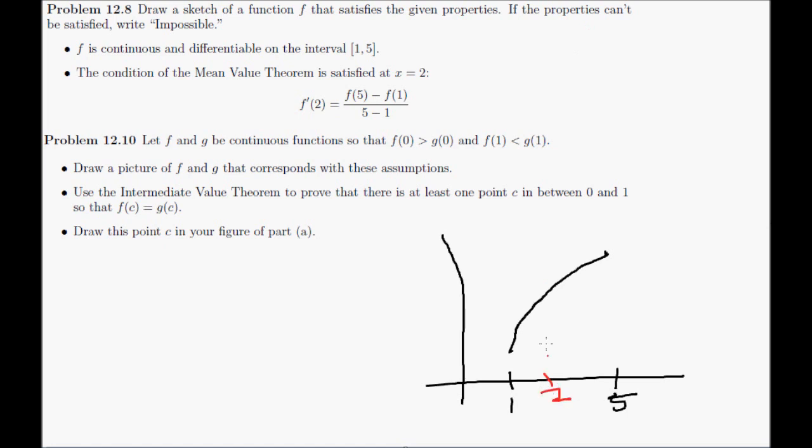the slope at 2, the slope of the tangent line at 2, is the same as the slope of the line connecting 1, f of 1, and 5, f of 5.